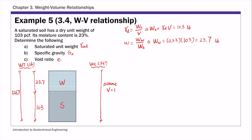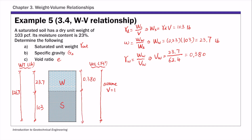Next is the volume side. Since we know the weight of water, using the unit weight of water as a constant — defined as weight of water over volume of water — the volume of water is 23.7 divided by 62.4, which equals 0.380 cubic feet. Then the volume of solids is total volume minus volume of water, which is 1 minus 0.380 equals 0.620 cubic feet.